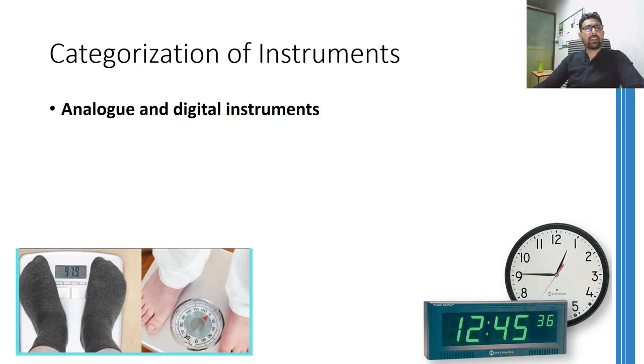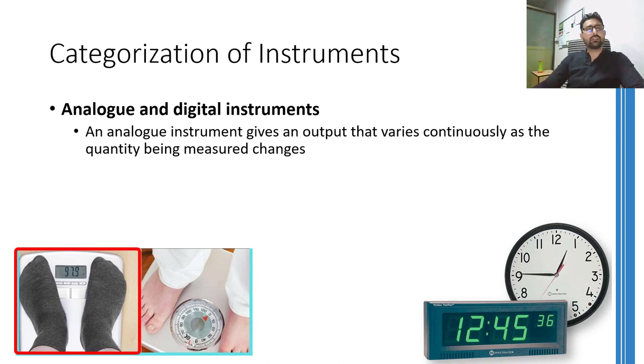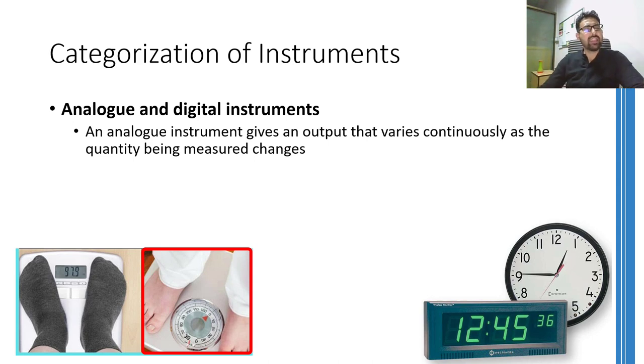The next characteristic through which we can categorize instruments is the type of output that instrument can generate. And by type, I mean whether it is generating an analog signal or a digital signal. Without going into the details of what analog and digital mean, I can safely say that analog instruments produce continuous output as the input changes, whereas digital instruments produce discretized output as the input changes. Simple example to clarify my point can be of a bathroom scale. This scale will show discrete output that is 97.9, 98.0, 98.1 and so on. Whereas this weighing scale has a continuous pointer that can show any value on the scale. However, our inability to read values beyond certain decimal places doesn't make the device digital.